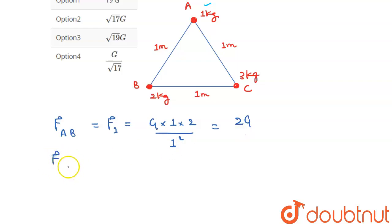Now force on A due to C. Let's call it F2. G into 1 into 3 over R square. So F1 is 2g and F2 is 3g. Now, let's get the resultant.